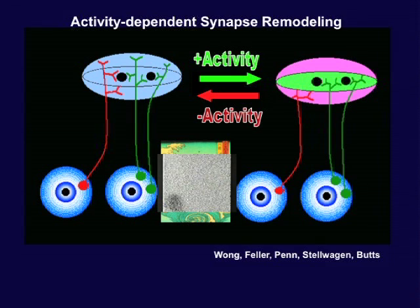We did a conceptually simple experiment: we compared gene expression under normal conditions versus activity-blocked conditions. We blocked activity by infusing tetrodotoxin, which blocks voltage-sensitive sodium channels and thus blocks action potential activity. We dissected out the LGNs and extracted RNA from the LGN neurons, then compared gene expression in activity-present versus activity-absent LGNs during the very period when the eye-specific layers are forming. We found a number of really interesting candidate genes.